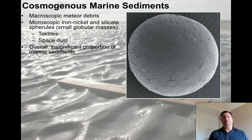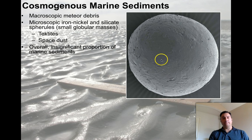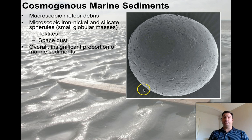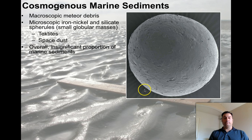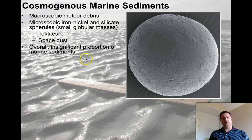The last of the group is cosmogenous marine sediments — basically microscopic, or in some cases macroscopic, meteor debris. This little spherule is a tektite derived from taking a piece of space dust, dropping it through the atmosphere; it burns up, turns into a little round ball, and winds up at the bottom of the ocean in many cases. Sometimes it lands on earth, but if it hit you, you would hardly even feel it — it's just a tiny grain of sand. Overall it's an insignificant proportion of marine sediments, but they're present and we can see them.